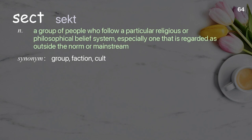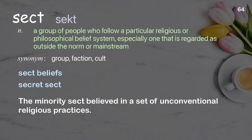Sect: A group of people who follow a particular religious or philosophical belief system, especially one that is regarded as outside the norm or mainstream. Examples: Sect beliefs. Secret sect. The minority sect believed in a set of unconventional religious practices.